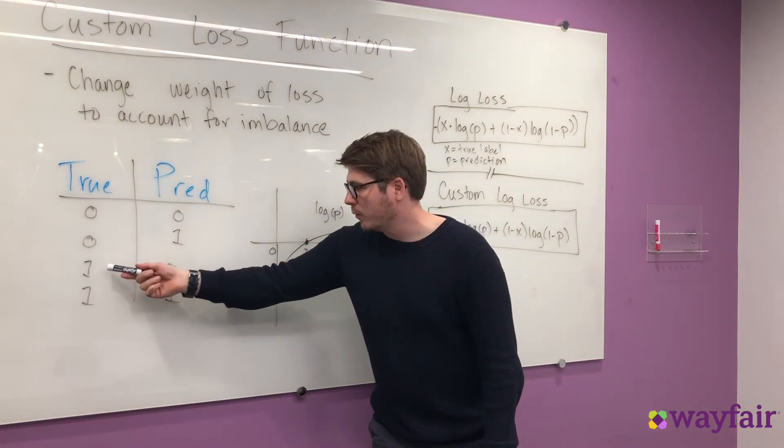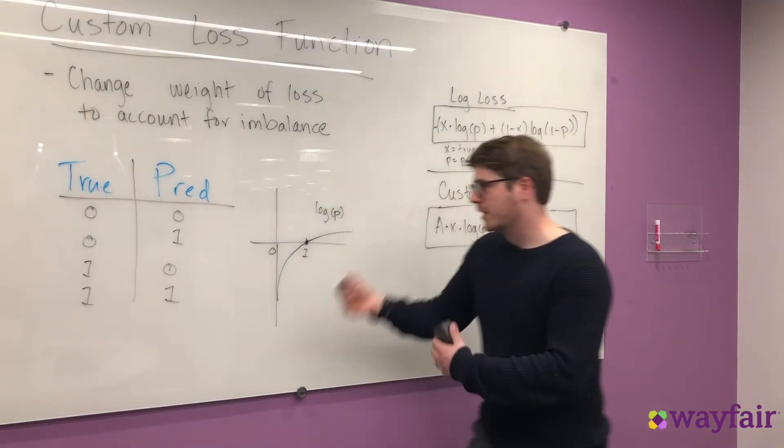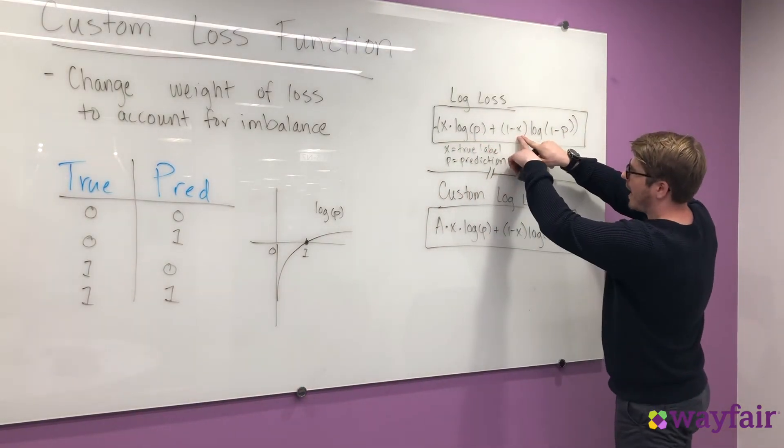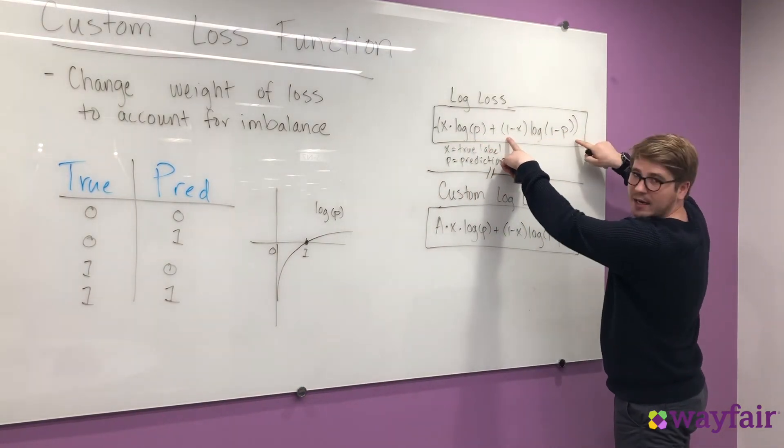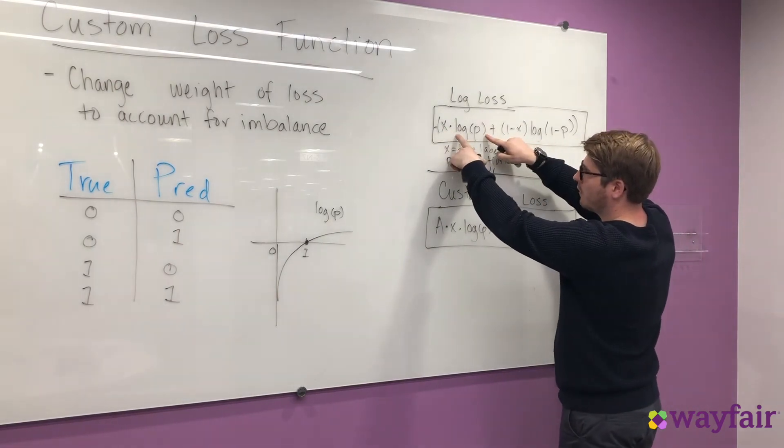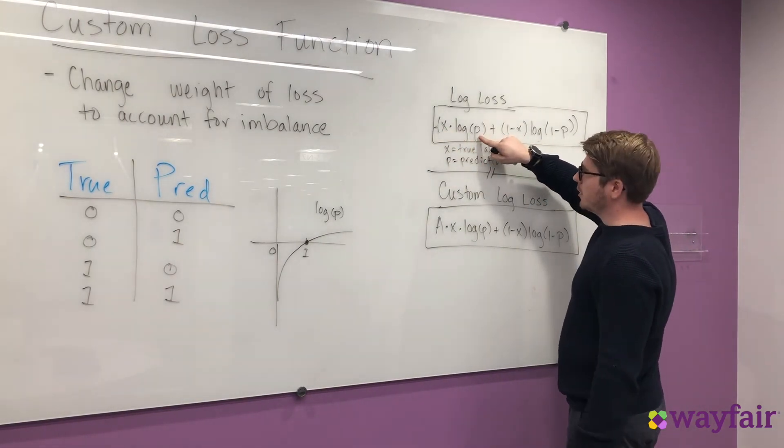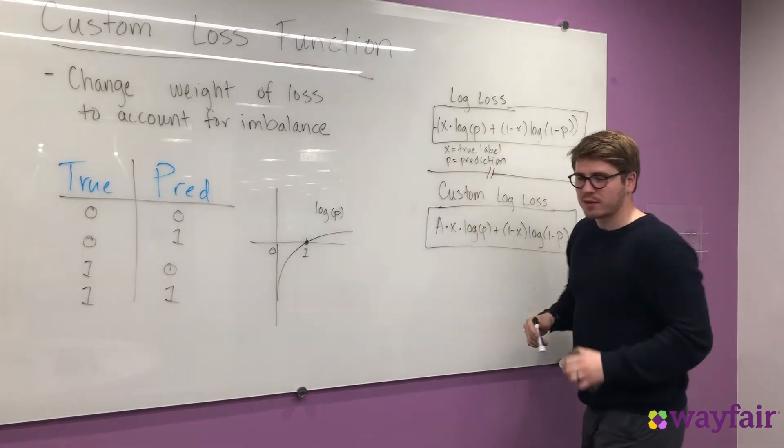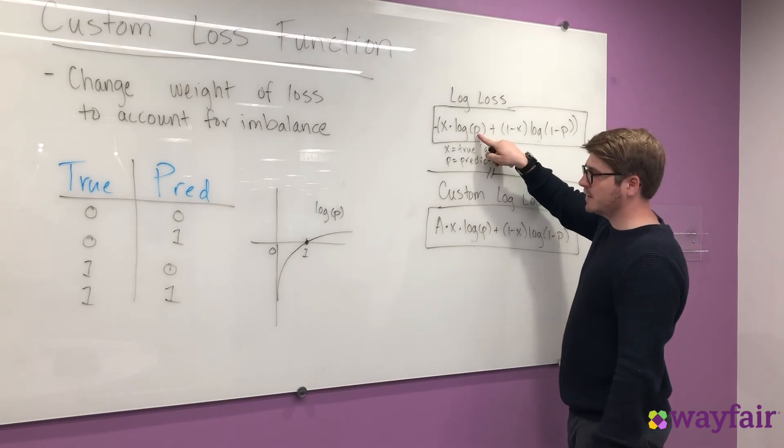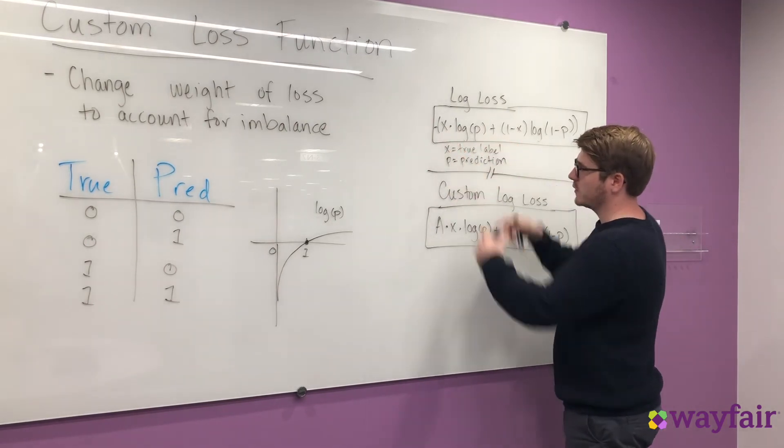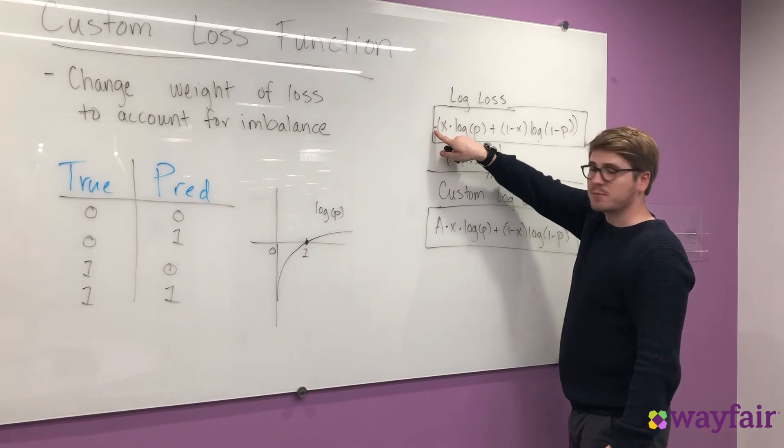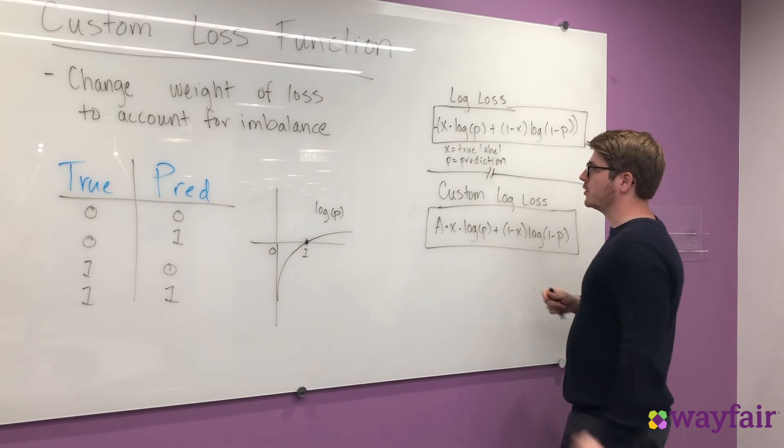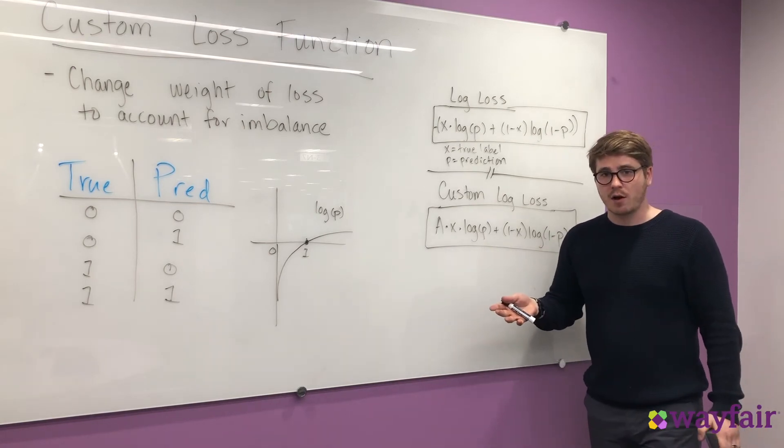We can also walk through when true equals 1. So if true equals 1, this x equals 1, which means this second term drops out, and then we have 1 times log of p. If p is equal to 1, then it's 1 times log of 1, which means that the loss is 0. But if p is equal to 0, that means it's 1 times negative infinity, once again, times negative 1. So we have a huge loss. So that's how we can understand the intuition between general log loss functions.